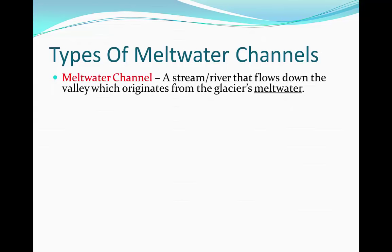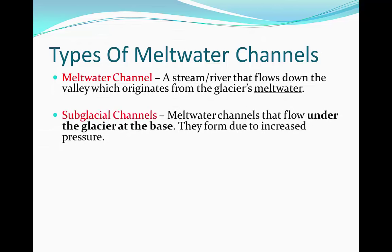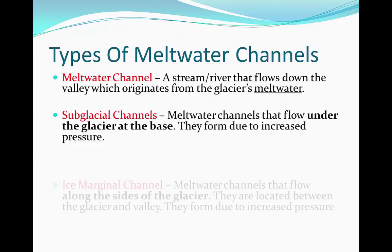A meltwater channel is a stream or a river which flows down the valley and originates from a glacier's meltwater. They can be subglacial channels, which are meltwater channels that flow under a glacier and form at the base. This happens because there's increased pressure on the glacier, so the base of it melts.